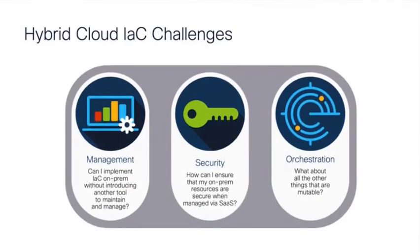The need for speed and application agility is driving infrastructure as code adoption in public clouds. But integrating your on-prem environment with infrastructure as code can mean more work to make sure it is secured and having to manage more tools for every data center or edge location you look after.